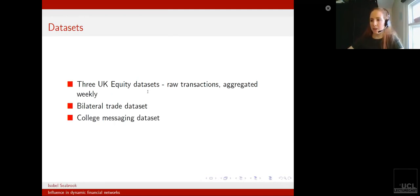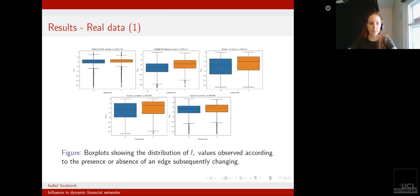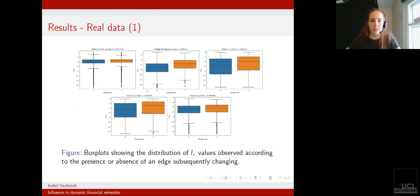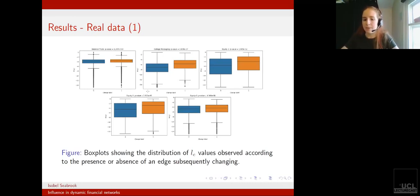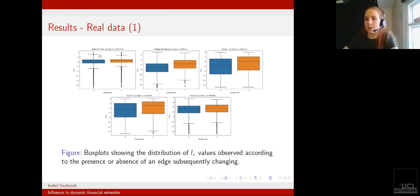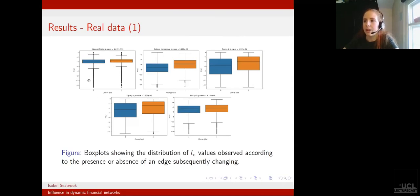First, we can make some simple observations from the data. Here I'm looking at the distributions of the values of LE, separated by whether or not edges subsequently change. The blue boxes show the distribution of LE values for edges which don't subsequently change, and the orange ones show the distributions for edges which do.